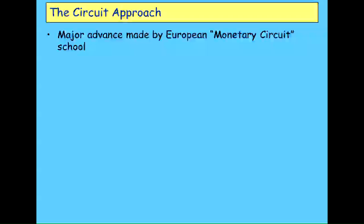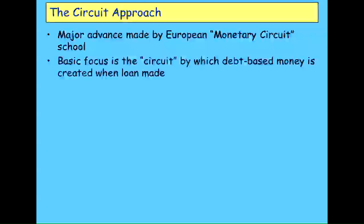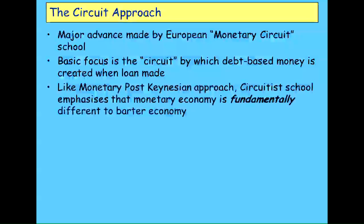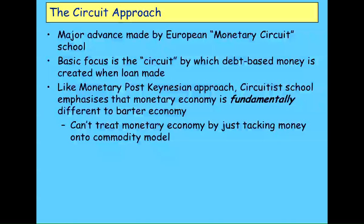To me, the main group that made it possible to really develop a true model of money creation was the circuit school in Europe — people working mainly in Italy but also France and Germany. What they focused on was what they called the circuit by which debt-based money is created when a loan is made, and then circulates through the economy. It argues that a monetary economy is fundamentally different to a barter economy. Keynes said that in the General Theory but then continued to say money plays no formal role in his model — that was a mistake. The circuit school shows how you can bring it in, and you can't do it the way neoclassicals do by simply taking a commodity model and adding money as an additional commodity.